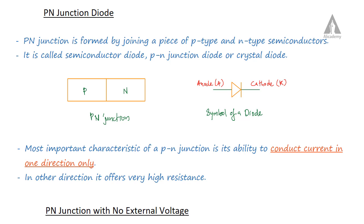In this lecture, we are going to discuss the PN junction diode. A PN junction is formed by joining a piece of p-type material and an n-type semiconductor material. This PN junction is otherwise called a semiconductor diode, or we can simply call it a PN junction diode or crystal diode.